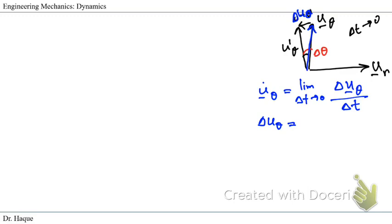The radius here is the unit vector u_θ, and the angle covered is delta-θ. Since we consider only the magnitude, and the magnitude of u_θ is one...